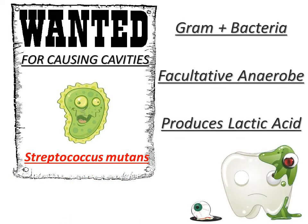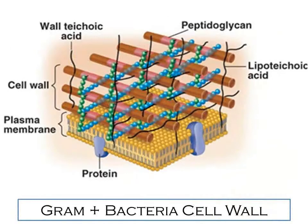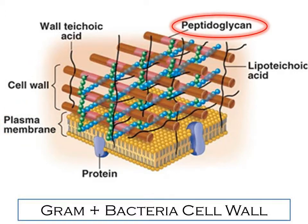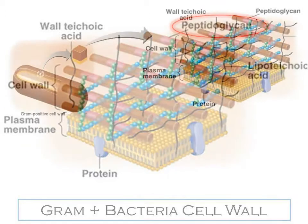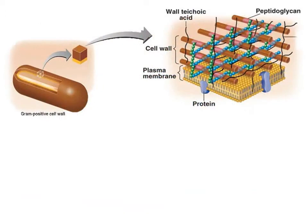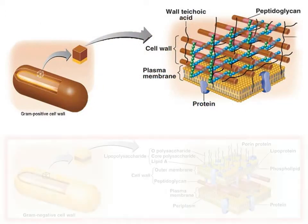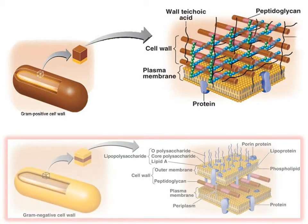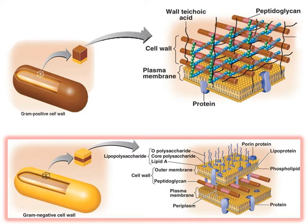This is a gram-positive facultative anaerobe, and it's important that we learn what these terms mean. Gram-positive bacteria only have one membrane, coated with a thick layer of peptidoglycan, which is the target for many antibiotics. This makes gram-positive bacteria much easier to combat than their gram-negative counterparts, which have a thinner layer of peptidoglycan safely sandwiched between two membranes.